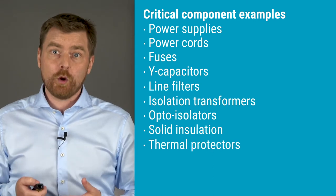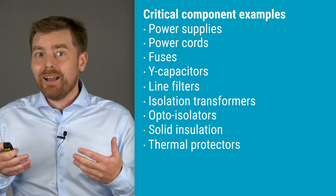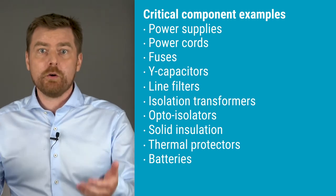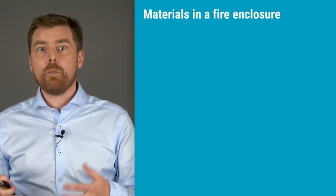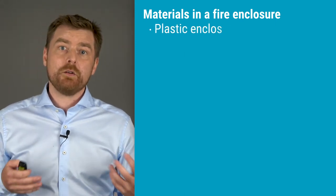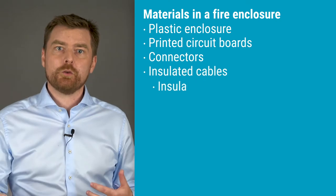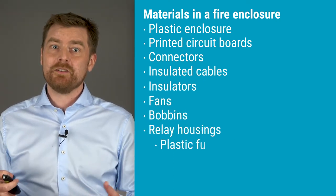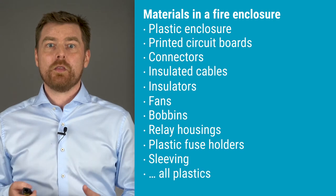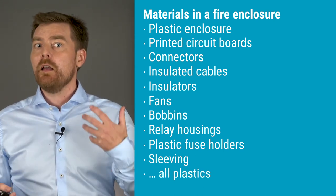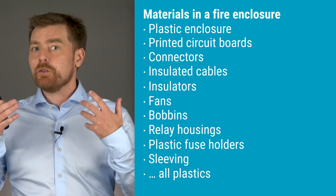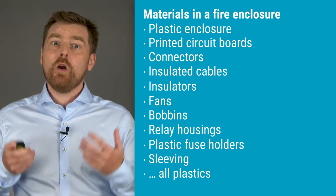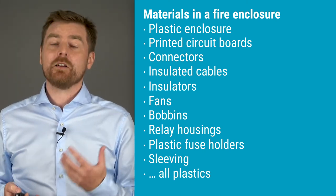A fault in thermal protectors can expose the user to heat. A battery can cause fire or even explode. And connectors can fail to provide insulation. Also, identify materials that are inside or part of a fire enclosure. Examples include the plastic enclosure, printed circuit boards, connectors, insulated cables, and components with plastic parts such as insulators, fans, bobbins, relay housings, fuse holders, sleeving, and so on. In short, all plastics should be identified as critical components.